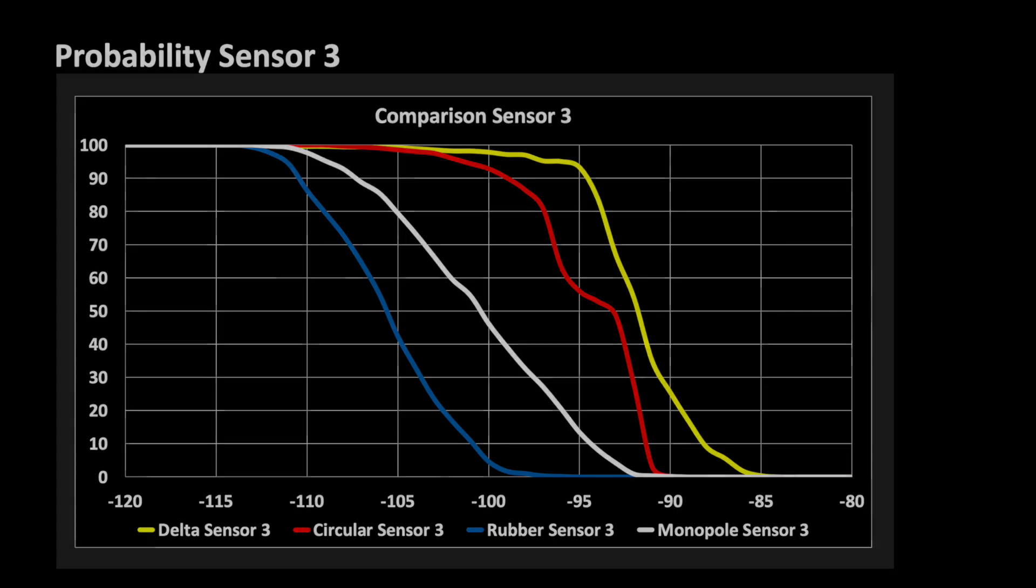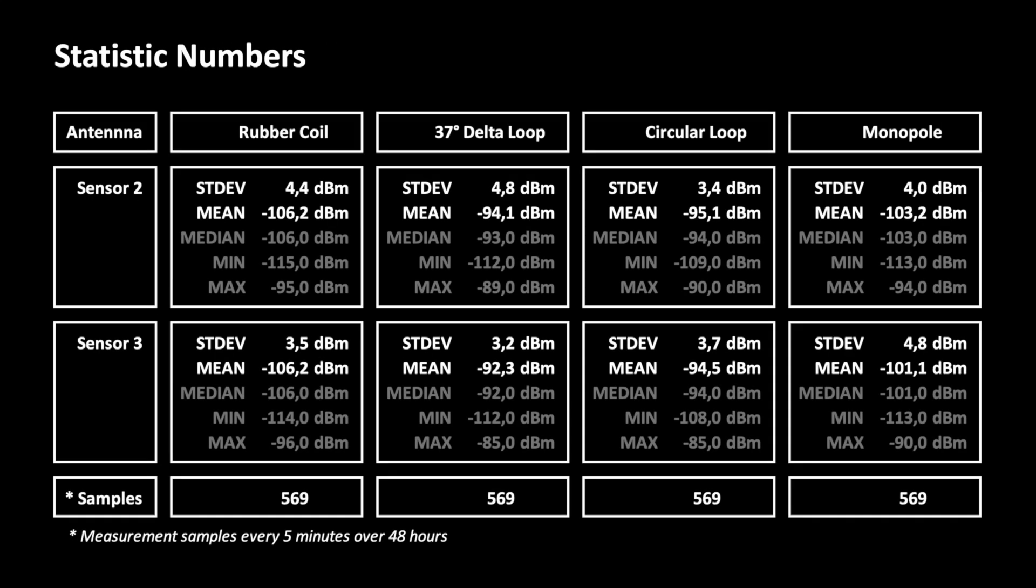The first criterion for assessing a radio channel is the mean signal strength, which should be as high as possible. In our case, the radio propagation paths are the same, and this way we can compare the performance of antennas with that statistic. The second criterion is the standard deviation, which is a measure of the signal variance. It should be as small as possible.